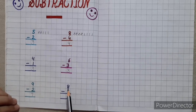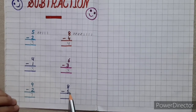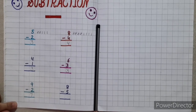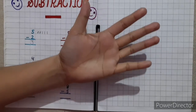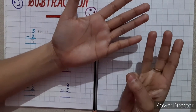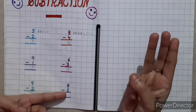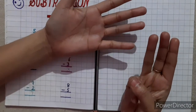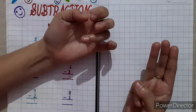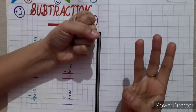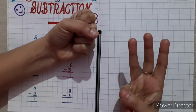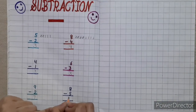Next is eight minus five. Put up eight fingers: five, six, seven, eight. This is minus five, so put down five fingers: one, two, three, four, five. So how many fingers are left? Three — so three is the right answer. Write three here.